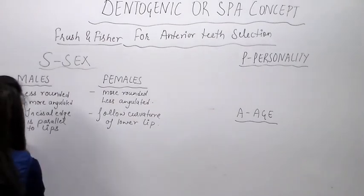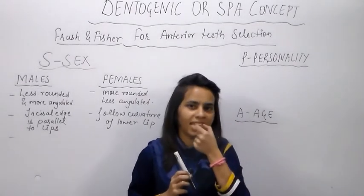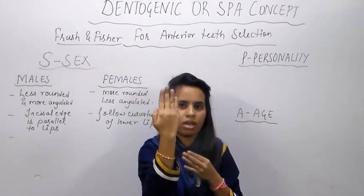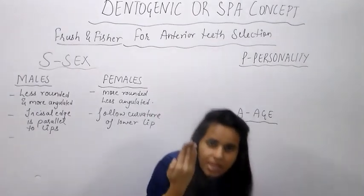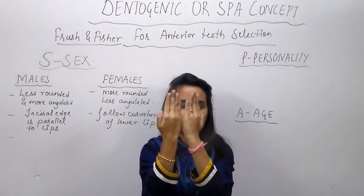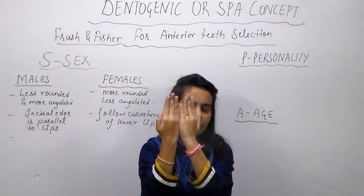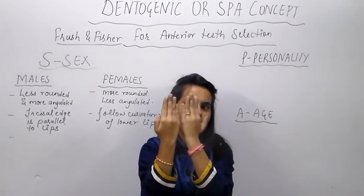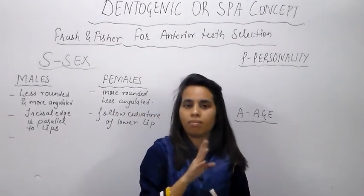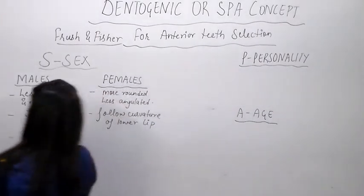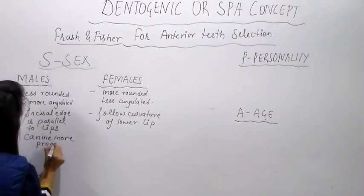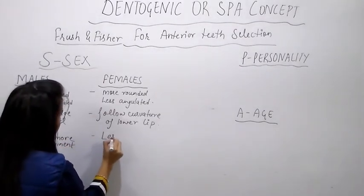Another difference: in females, the central incisor's distal surface and the lateral incisor's mesial surface are oriented anteriorly in a certain way. In males it is just the opposite — the canines are more prominent compared to females. So in males, canines are more prominent, while in females they are less prominent.